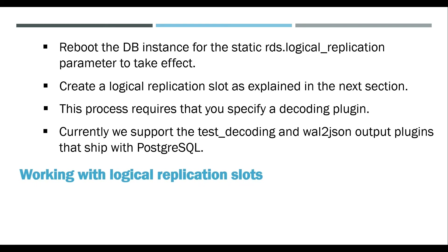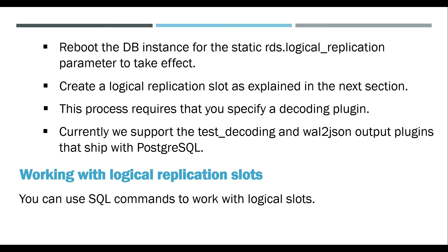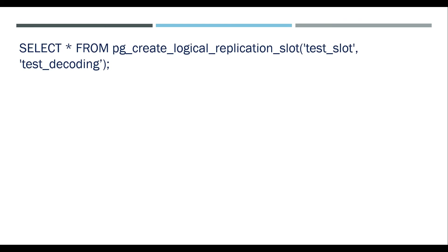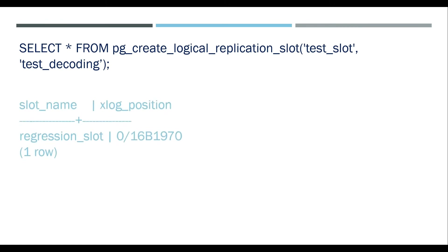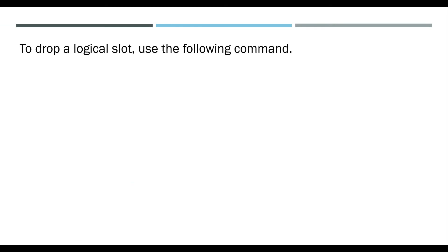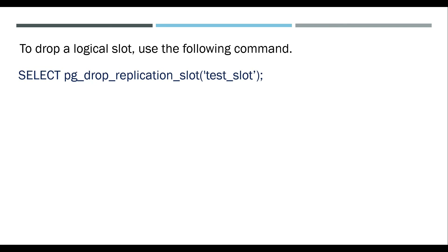Working with logical replication slots — you can use SQL commands to work with logical slots. For example, the following command creates a logical slot named test_slot using the default PostgreSQL output plugin test_decoding: SELECT * FROM pg_create_logical_replication_slot('test_slot', 'test_decoding'). To drop a logical slot, use: SELECT pg_drop_replication_slot('test_slot').